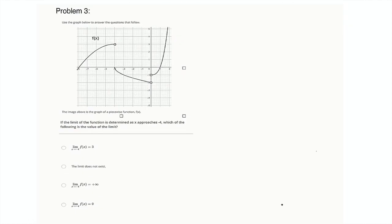So for problem 3, it says use the graph below to answer the questions that follow. So it says the image above is the graph of a piecewise function. Cool. If the limit of the function is determined as x approaches -4, which of the following is the value of the limit? Well, let's see. Where is x negative 4?